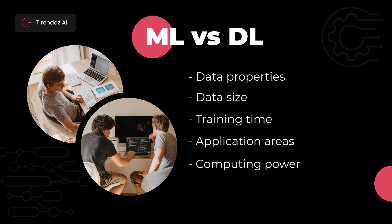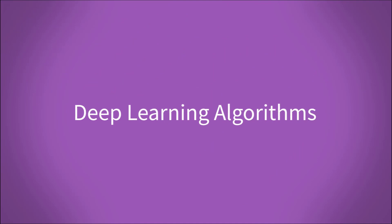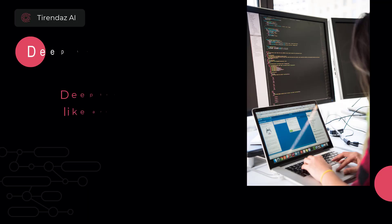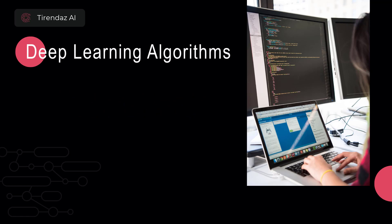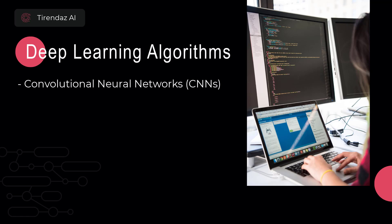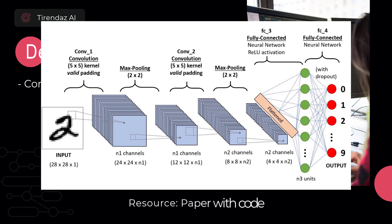Let's move on to deep learning algorithms. Deep learning is more like art than science. You can obtain great models if you build the right architecture for your project. CNN architecture has revolutionized image processing. Thanks to this algorithm, computers gained human-level vision. This architecture uses filters and layers to extract patterns in images.